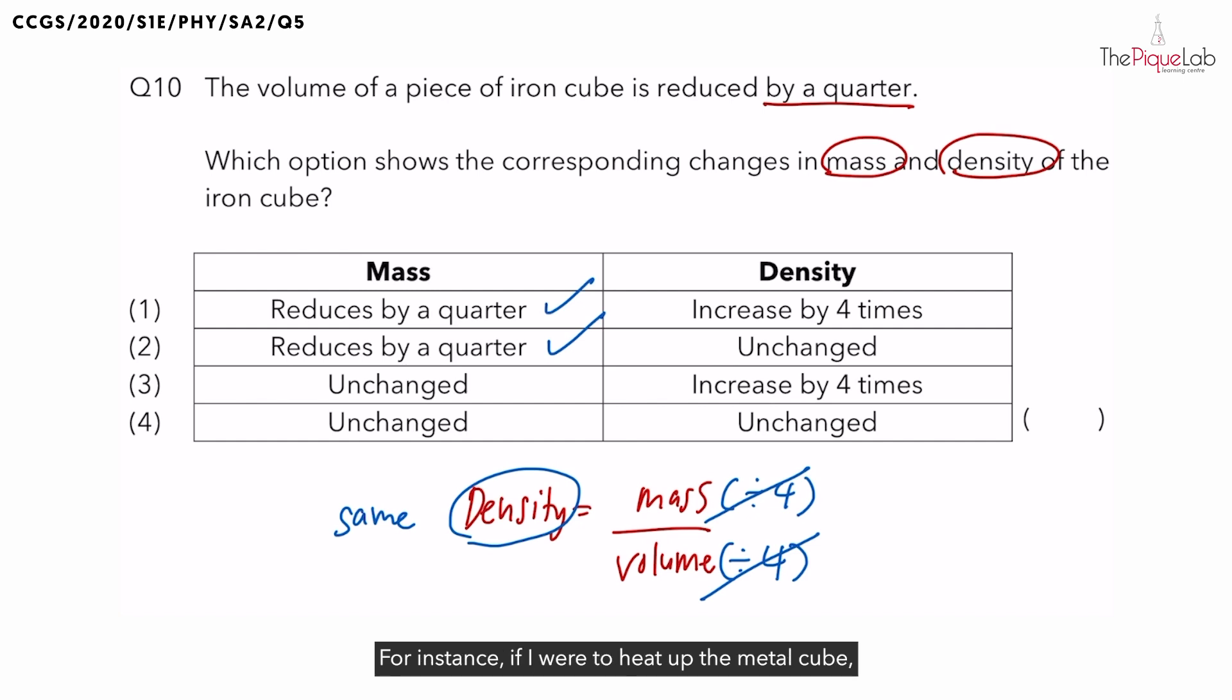For instance, if I were to heat up the metal cube, what will happen to its size? The cube will gain heat and expand to increase in size. Imagine that the volume doubles. But did the mass of the cube change when you heat up the cube? Was any extra iron added to the cube? No.